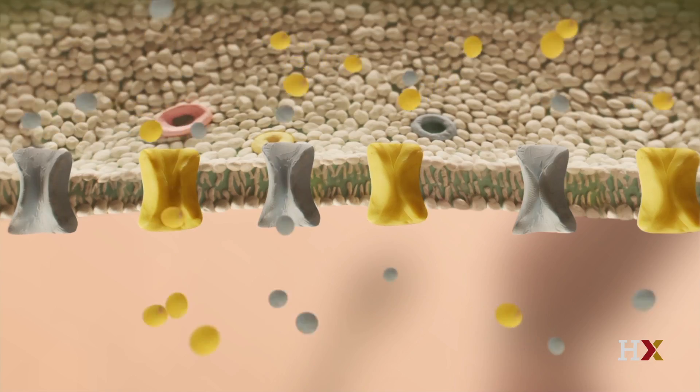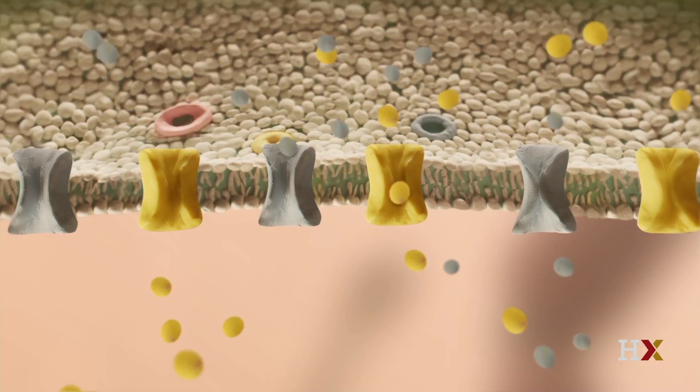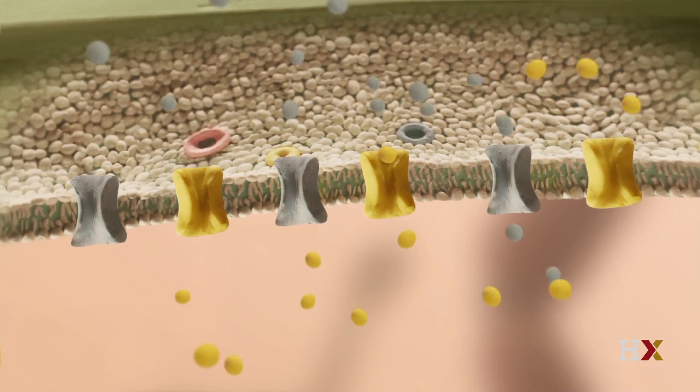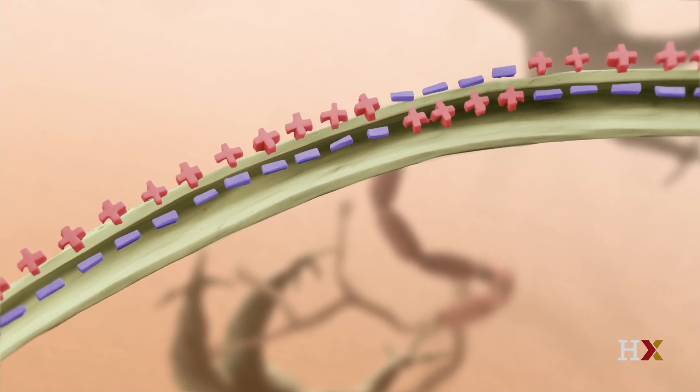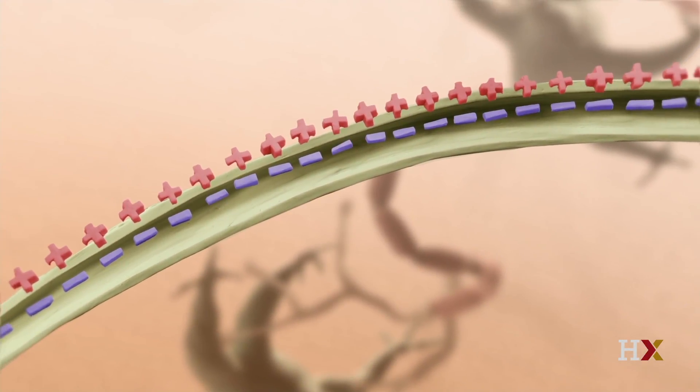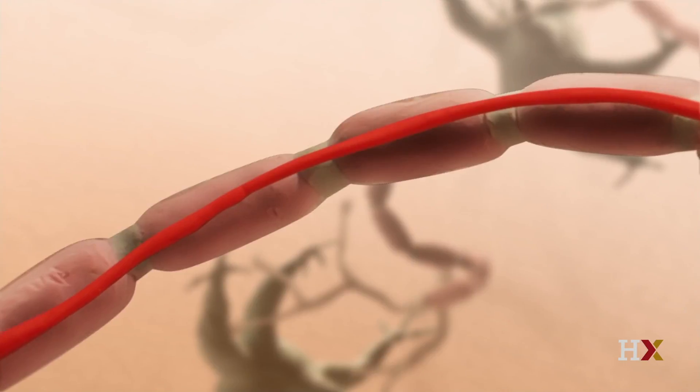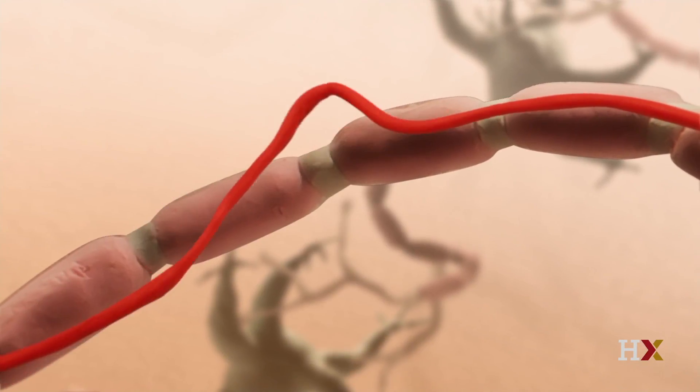We'll be continuing where we left off in part one, where we explored the electrical properties of neurons, action potentials, and action potential propagation.